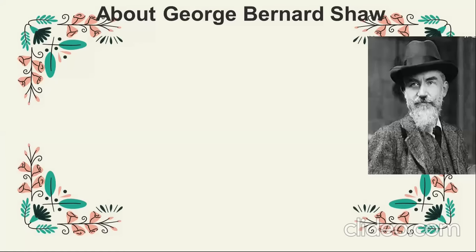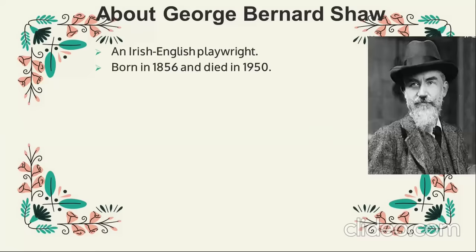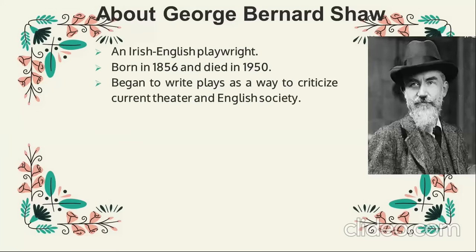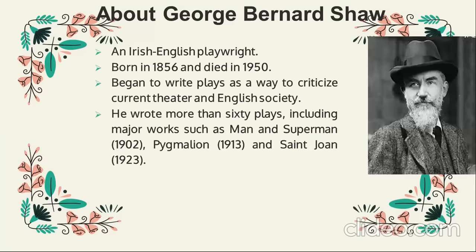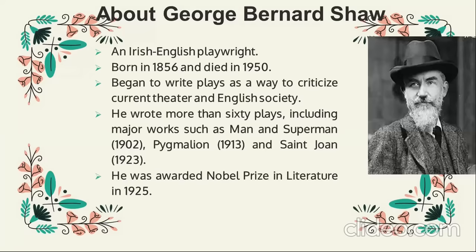George Bernard Shaw was an Irish playwright. He was born in 1856 and died in 1950. He began to write plays as a way to criticize current theatre and English society. He wrote more than 60 plays. His famous works are Man and Superman, Pygmalion in 1913, and Saint Joan in 1923. He was awarded the Nobel Prize in Literature in 1925 and he was well known for his problem plays.